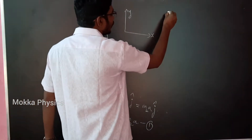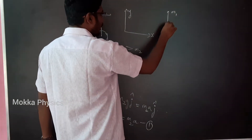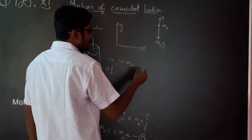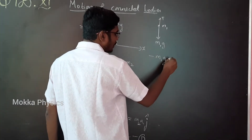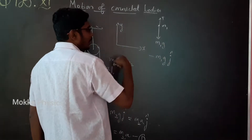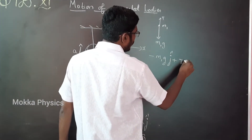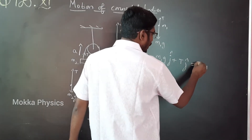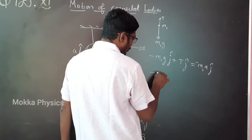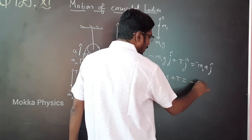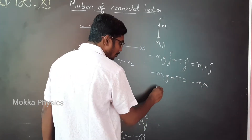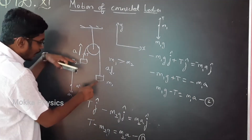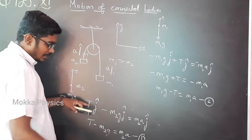Now let us draw a free body diagram for m1. If you see m1, the weight is downward and tension is upward. The equation in j-component: minus m1g plus T equal to minus m1a. Multiplying throughout by minus one gives us m1g minus T equal to m1a. This is the second equation.